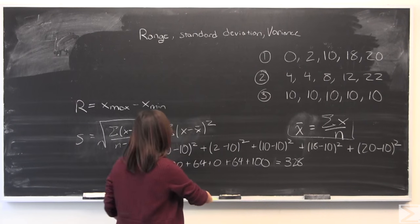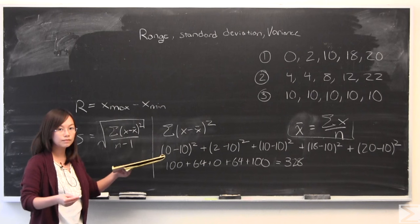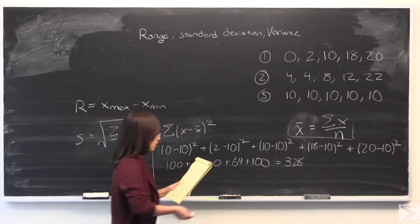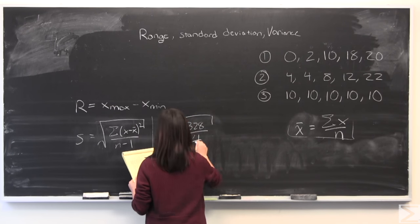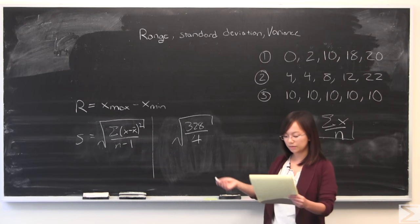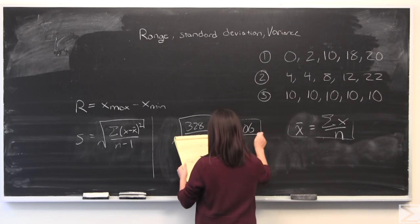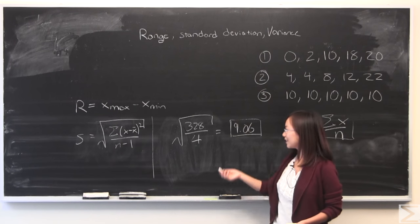After you do that, that's just this part. You also have to divide it by n minus 1, which is going to be 4, and you have to take the square root of that. The square root of 328 divided by 4 will give you a standard deviation of 9.06.